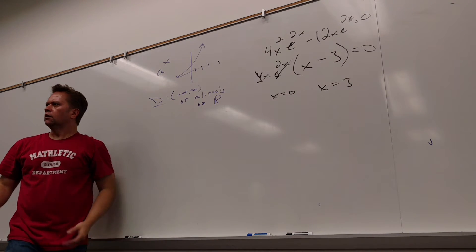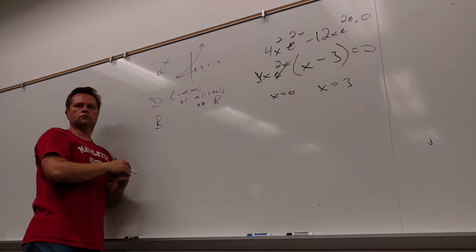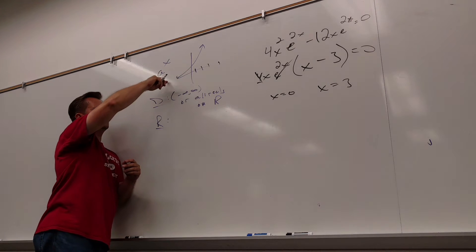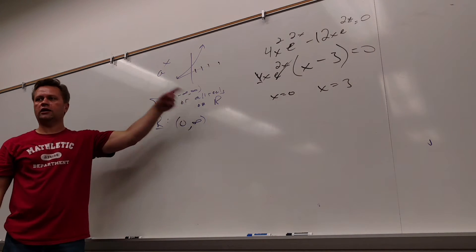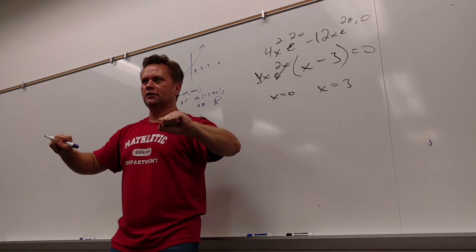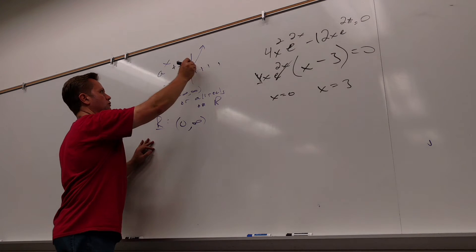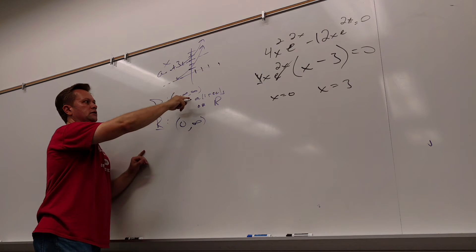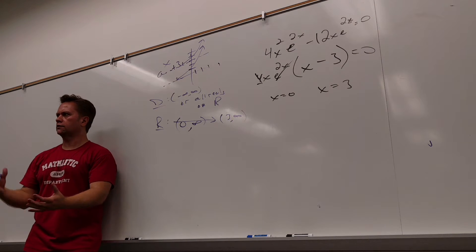That symbol means all real numbers — it's the R with an extra spine, a double-spine R. What about the range? Look at the picture: the smallest output is almost 0, and then it goes to infinity. So range is 0 to infinity. If I move it left or right the domain doesn't change — it's like an infinitely long bar. But if I move it up or down, everything shifts. If I add 3, the asymptote moves to y equals 3, so the range becomes almost 3 to infinity.